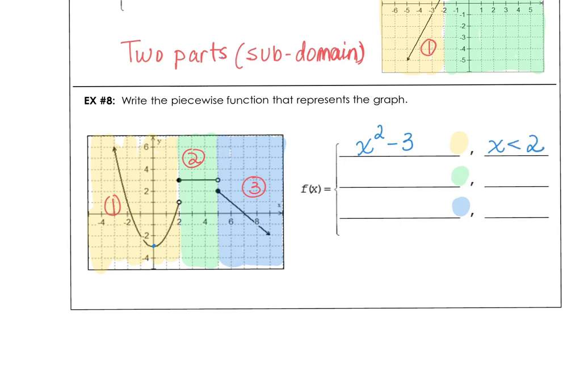The second equation is a constant function at y equals 3. And the domain begins at positive 2. So 2 is less than or equal to x, but it's less than 5.